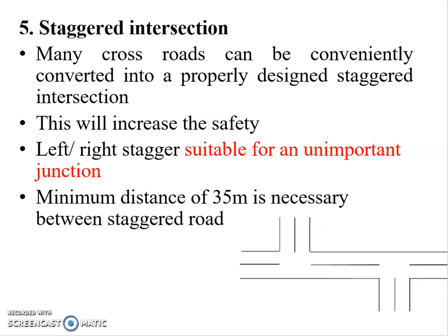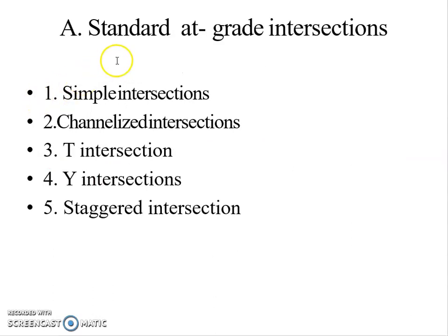To summarize, at-grade intersections have five classifications: first, simple intersections; second, channelized intersections; third, T-intersections; fourth, Y-intersections; and fifth, staggered intersections. The next slide will cover grade-separated intersections in classification detail. Thank you.